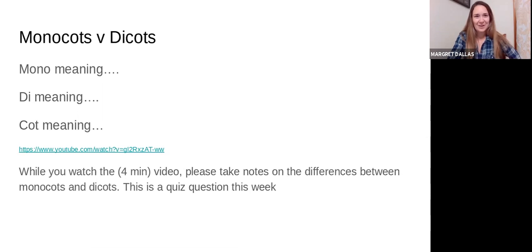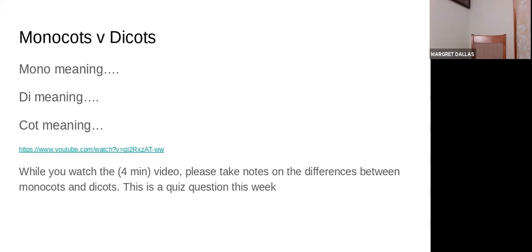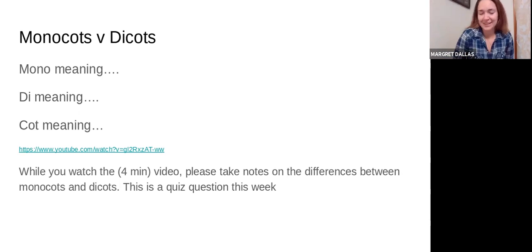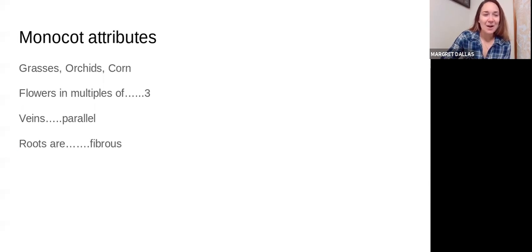Sorry, I got my oven going off — I'll be right back. And we're back. I'm cooking some pumpkin for my chickens. So this last part here, we talked a little bit about monocot attributes — this is what we did in class.